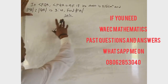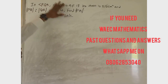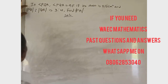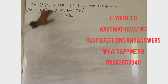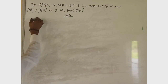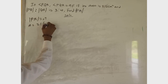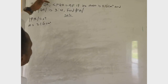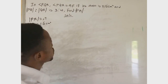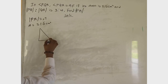This is the first question for today. In triangle PQR, the angle PQR is equal to 90 degrees. The area is equal to 216 cm². The ratio PQ to QR is 3 to 4. We want to find the sides of triangle PQR. Since angle Q equals 90 degrees, this is a right-angle triangle.